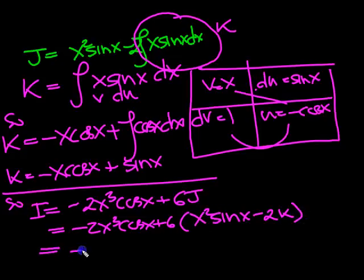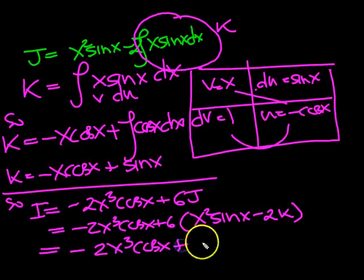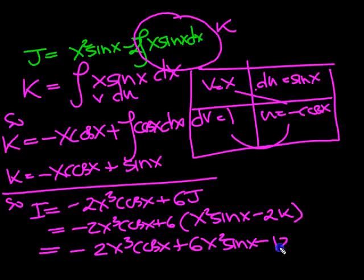So let's tidy that up first. Minus 2x cubed cos x. Expand that bracket, plus 6x squared sine x, minus 12k. And now the last thing then.